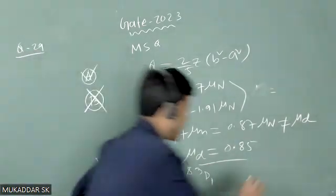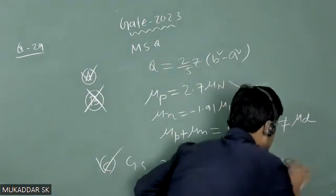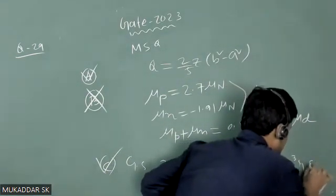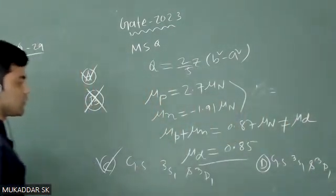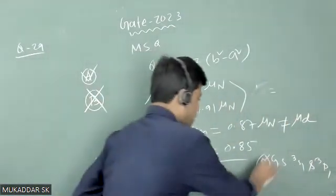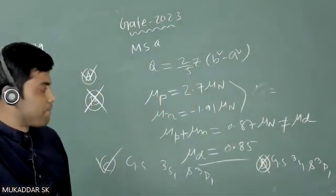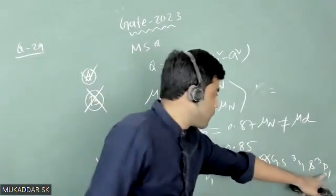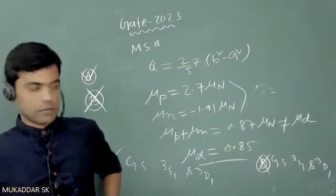In option D, the ground state of deuteron is given as 3S₁ and 3P₁. This is not correct because the parity of a deuteron is even. If we take P orbit, the parity is odd. That is not true.